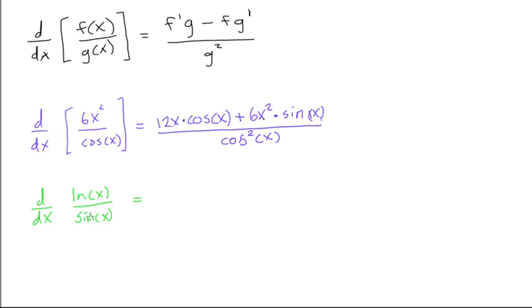we'll do f prime, again, times g. So the derivative of ln of x is 1 over x. So 1 over x, times sine of x, times sine of x.